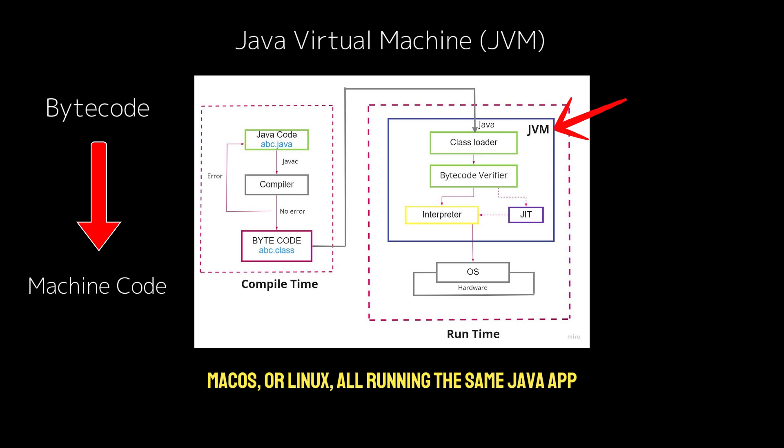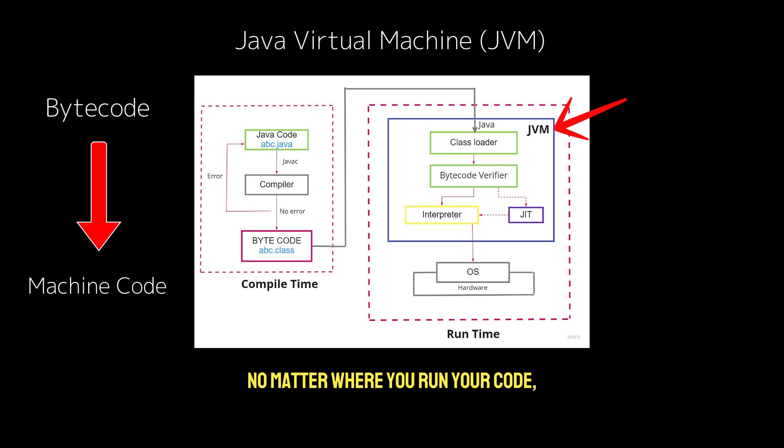Whether you have Windows, macOS, or Linux, all can run the same Java app. This is how Java achieves its famed portability. No matter where you run your code, the JVM ensures it runs the same way.